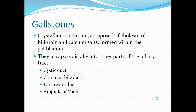First of all, let's go over what gallstones are. These are crystalline concretions that form in the gallbladder. They are formed from cholesterol, bilirubin, calcium salts, and combinations of all three. They may pass from the gallbladder distally to other parts of the biliary tract — they can go to your cystic duct, your common bile duct, your pancreatic duct, and they can get lodged in the ampulla of Vater.